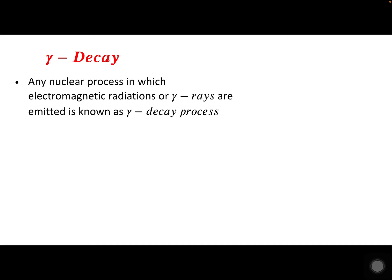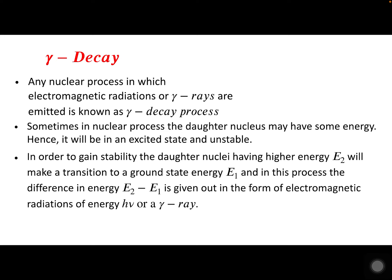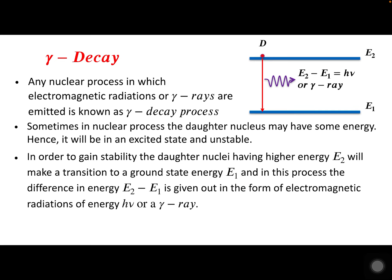Next we look at gamma decay, another process in nuclear physics. Any nuclear process in which electromagnetic radiations or gamma rays are emitted is called the gamma decay process. Sometimes in a nuclear process the daughter nucleus produced may have some energy and will be initially in an excited or unstable state. To gain stability, the daughter nucleus with higher energy E₂ makes a transition to the ground state with energy E₁, and the difference E₂ minus E₁ is released as electromagnetic radiation of energy hν, i.e., a gamma ray.